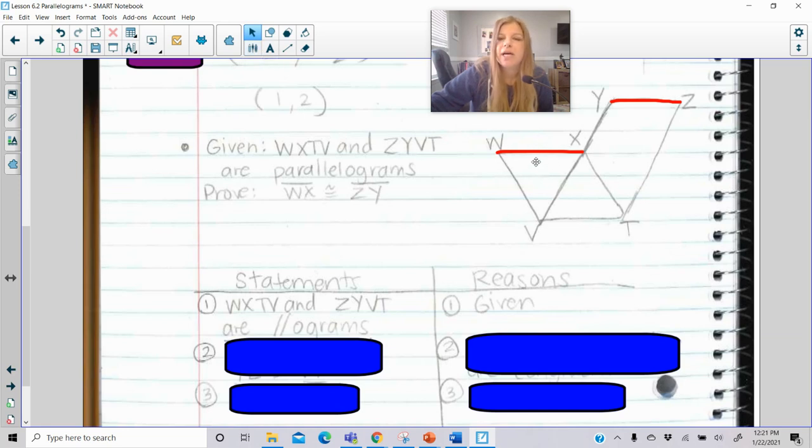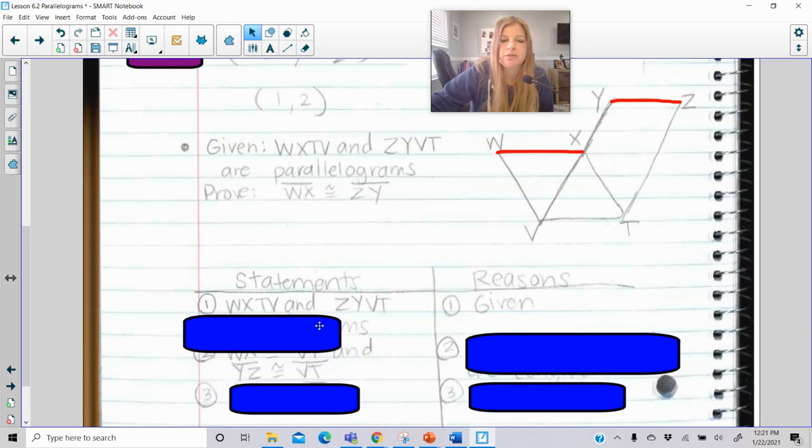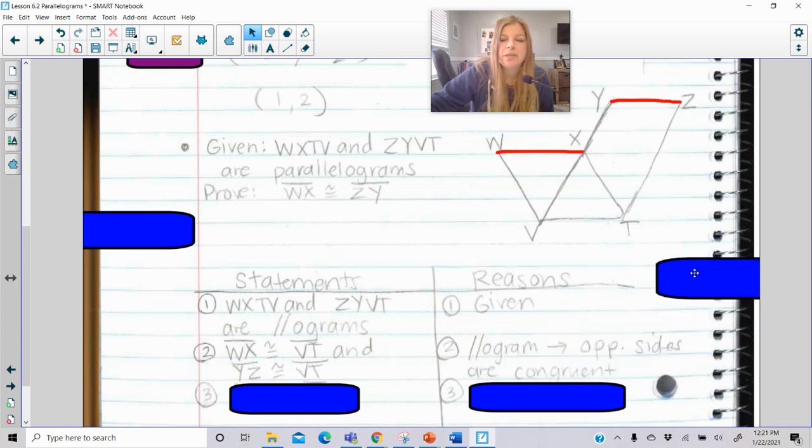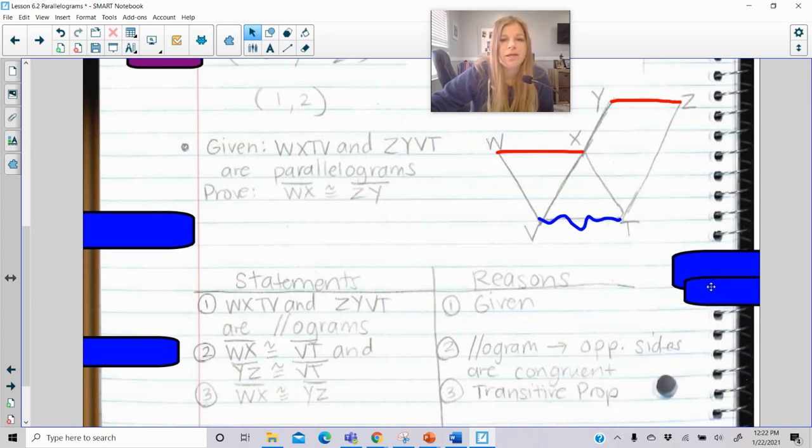We see these two parallelograms. We actually see they share a common side V, T. So what I can say is, well, W, X is congruent to V, T, segment V, T, and segment Y, Z is also congruent to segment V, T. And that's just simply the definition of a parallelogram, that opposite sides are congruent. Now since they're both congruent to V, T, they both have V, T in common, then I would be able to say that, well, then segment W, X is congruent to segment Y, Z because of my transitive property of congruence.